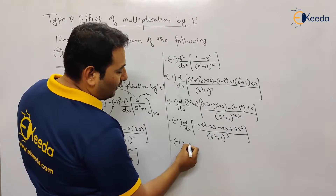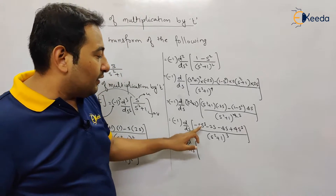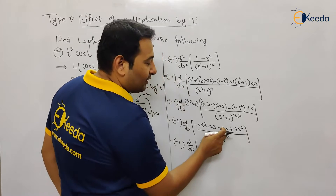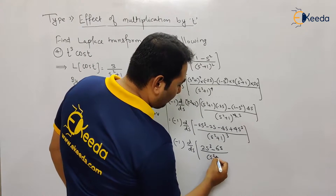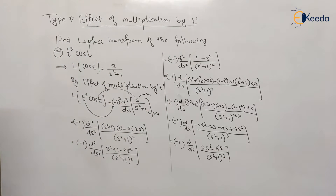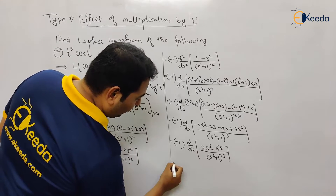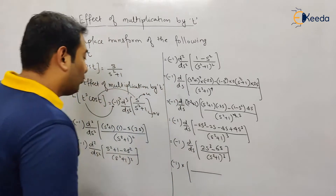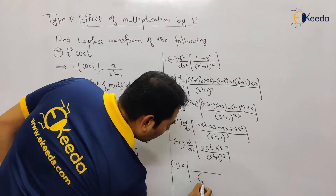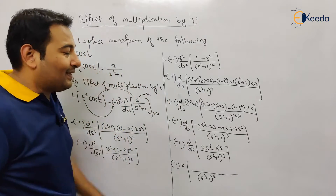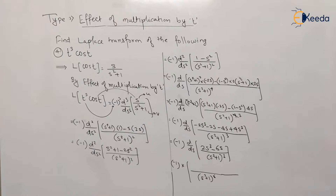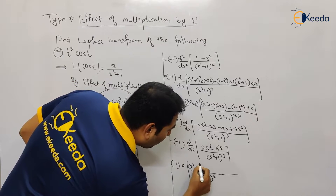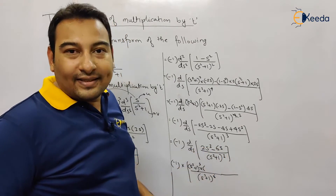One more derivative remains. We apply minus one and u/v rule again. The denominator squared is (s²+1)⁶. Then v as-is — (s²+1)³ — times the derivative of u: d/ds(2s³−6s) = 6s²−6. Minus u as-is — (2s³−6s) — times the derivative of v: d/ds[(s²+1)³] = 3(s²+1)²·2s by the chain rule.